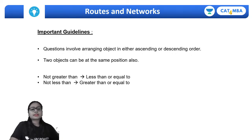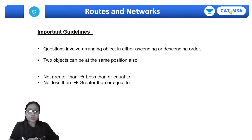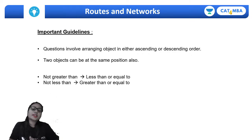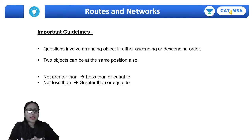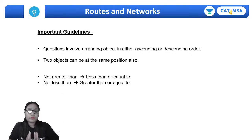Now let us discuss some important guidelines of ordering and sequencing. We have already done one class on linear arrangement and circular arrangement, and ordering and sequencing is quite related to that topic. However, there is one difference: in linear arrangement questions, two objects or people cannot occupy the same position. But in questions involving ordering or comparison, we can place two objects at a single position.